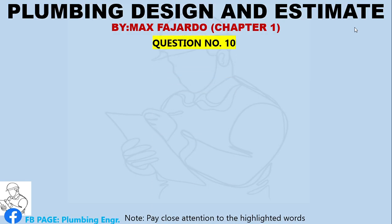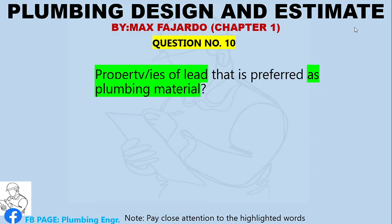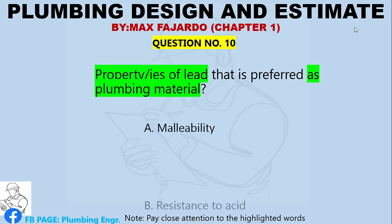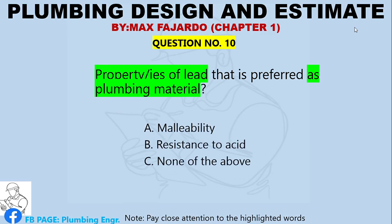What property or properties of lead is preferred as a plumbing material? A. Malleability. B. Resistance to acid. C. None of the above. D. Both A and B.